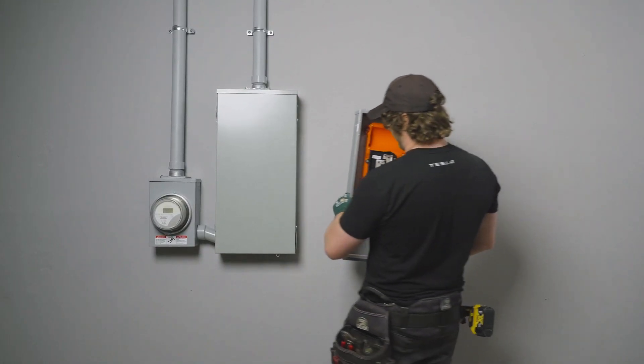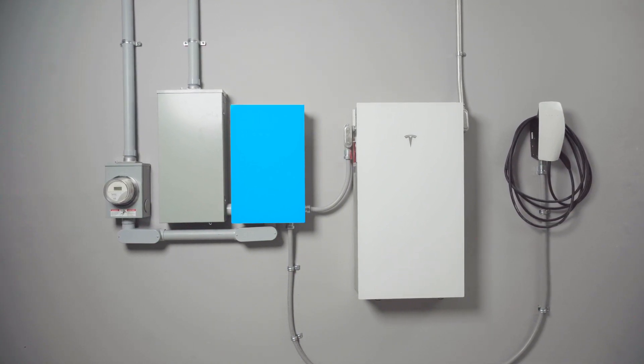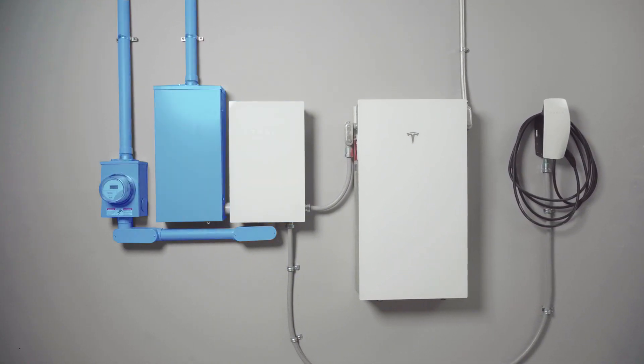The first step in installing Gateway is to mount the unit to a wall. Gateway intercepts the incoming power supply for a home's electrical system and is typically mounted close to the main electrical service.